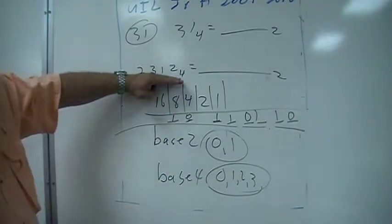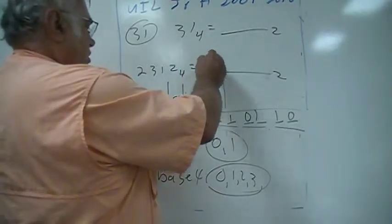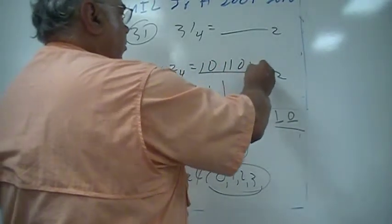So this number in base 4 would be 1, 0, 1, 1, 0, 1, 1, 0 in base 2.